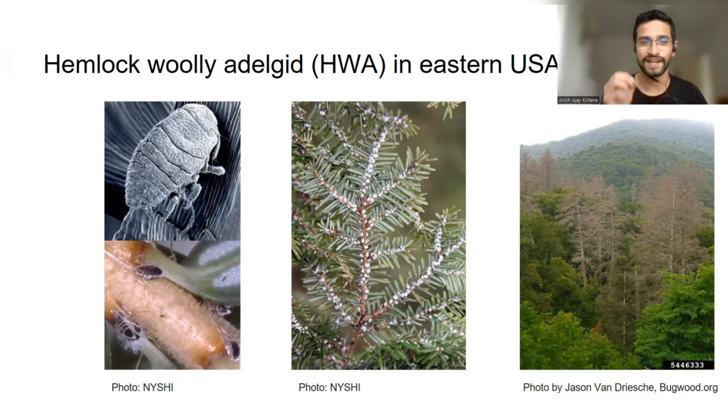Now these hemlock woolly adelgids can spread really fast because they're small and they can just get carried on by air currents. On top of that, they can reproduce asexually. So you only need one individual to get a new population started.